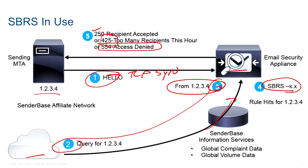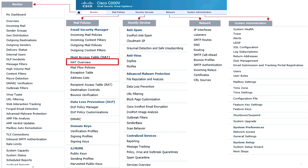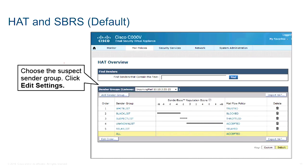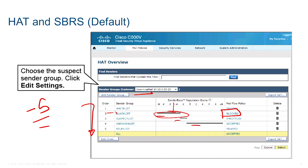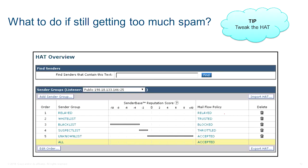Where do we go to play with the sender-based reputation score? You find it in the HAT (Host Access Table). When you go under the HAT, you can see for your incoming mail which category a sender falls into based on their reputation score. For example, if someone arrives with a score of minus 5, we check the HAT: minus 5 hits the blacklist, and the mail flow policy called 'blocked' is applied, blocking the connection.